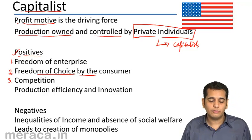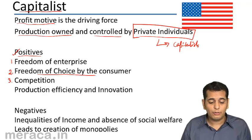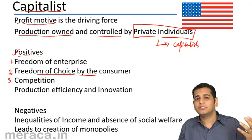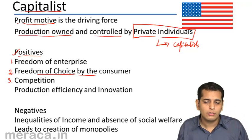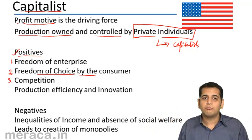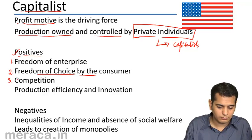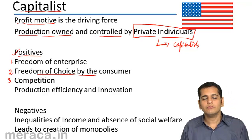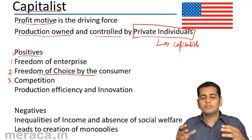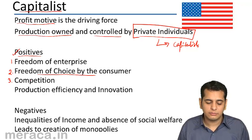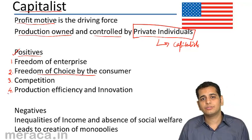The third point which is beneficial in a capitalist economy is competition. When you get freedom of enterprise, everybody is free to run and own an enterprise, free to manufacture the goods they want. Whoever wants to run any business, whoever wants to produce any goods can produce. So this leads to mass competition, and there is no restriction on that.